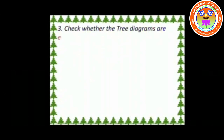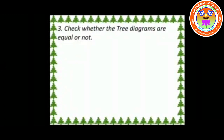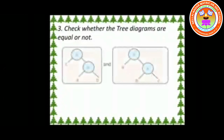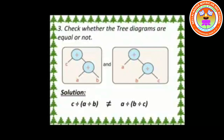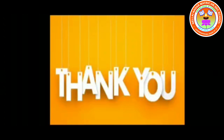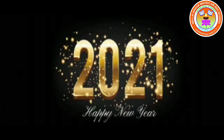Third one: check whether the tree diagrams are equal or not. From the first picture we can write it as C ÷ A ÷ B, while from the second picture we can write it as A ÷ B ÷ C. Here the left-hand side is not equal to the right-hand side — they are not equal. Thank you children, have a pleasant day and wish you all a very happy new year.